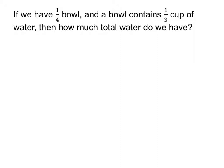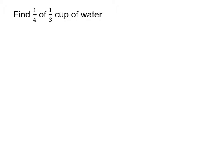In our next problem, we have a quarter of a bowl and the bowl contains a third of a cup of water. How much total water do we have? This is the exact same type of problem, just with different numbers. We take our number of bowls times the number of cups — one-fourth times one-third. We want to find one-fourth of one-third of a cup of water. Each bowl contained a third of a cup, and we have just a quarter of a bowl, so it's a quarter of a third of a cup.